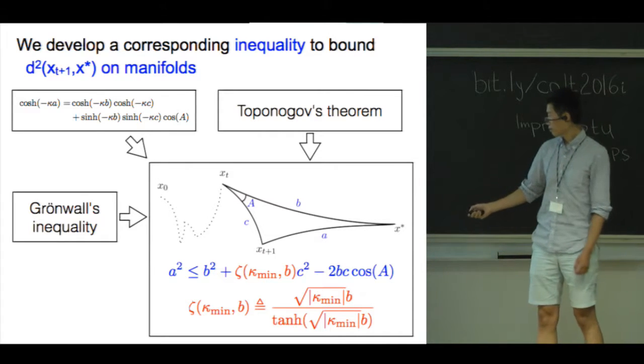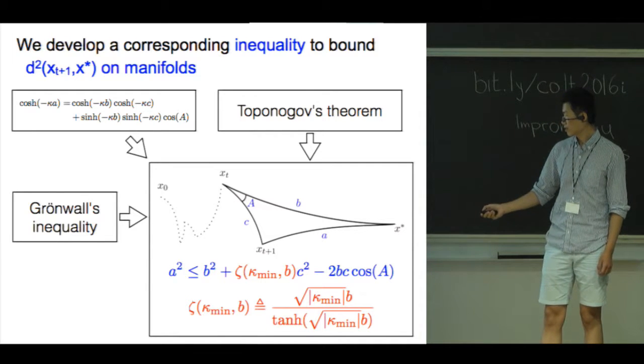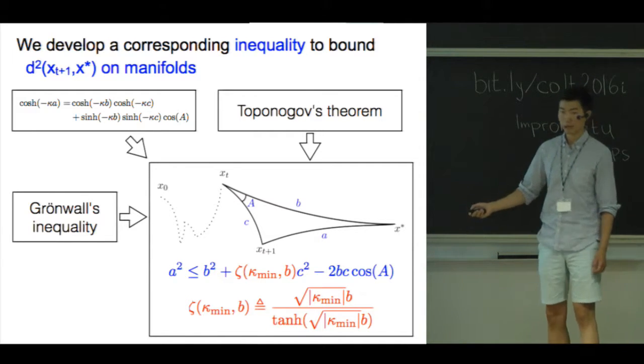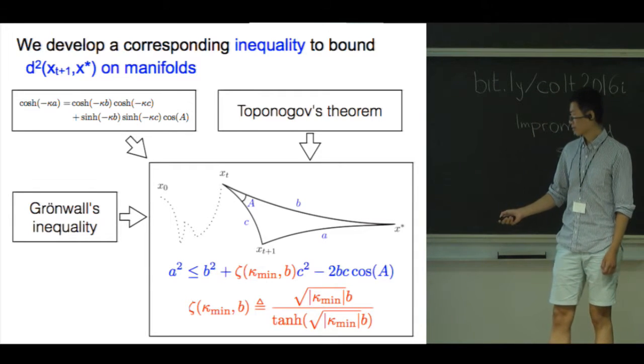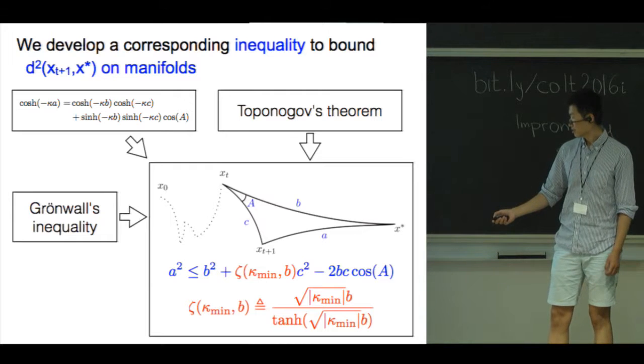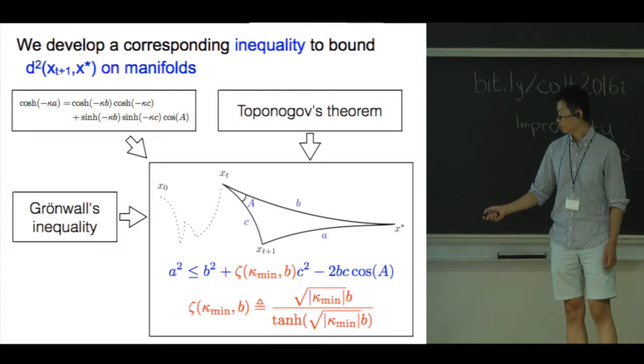If both kappa mean and B are bounded and either goes towards zero, then theta goes towards one, so we pay no additional price. On the other hand, if the numerator is much greater than one, then we pay the theta price, which is approximately equal to the numerator.